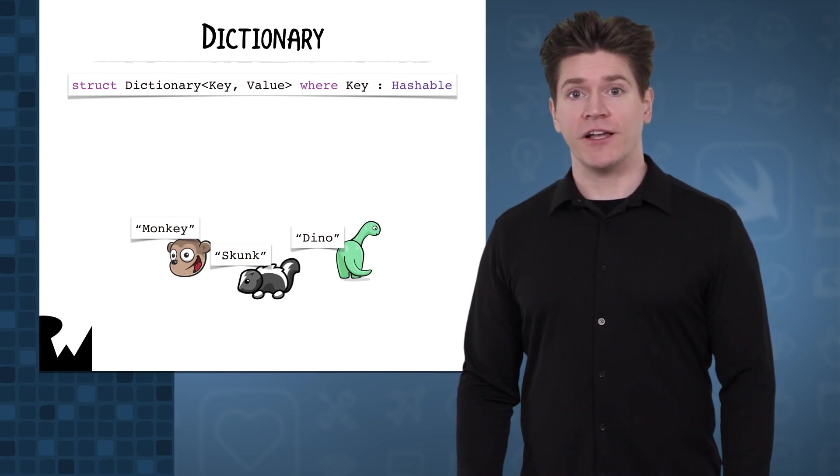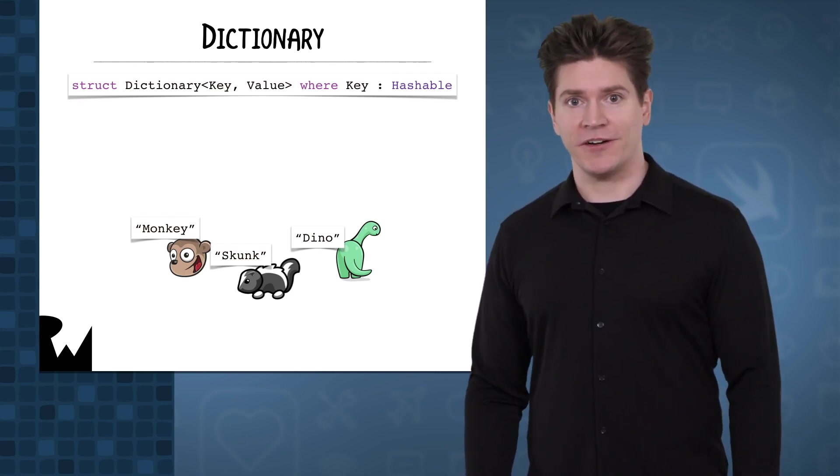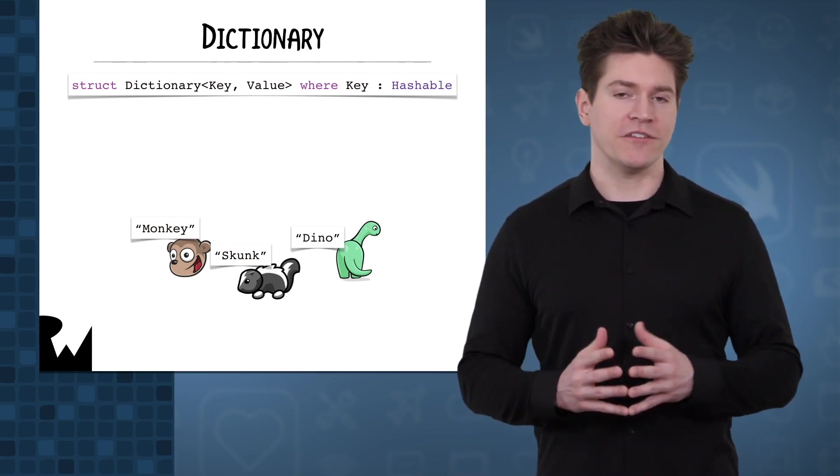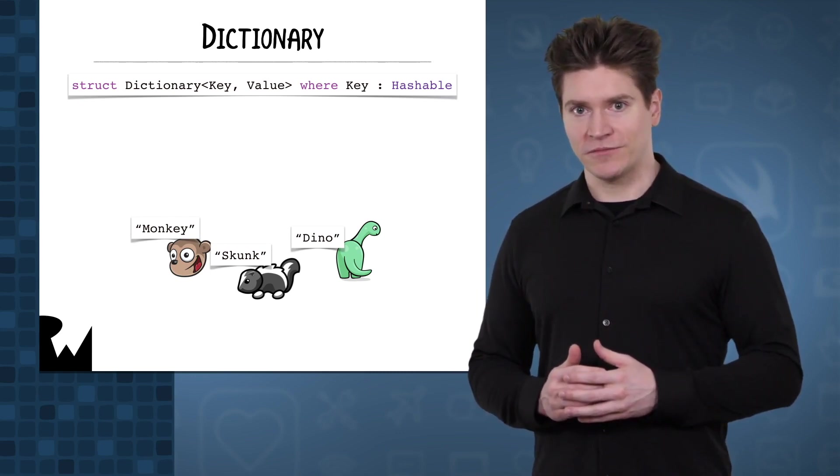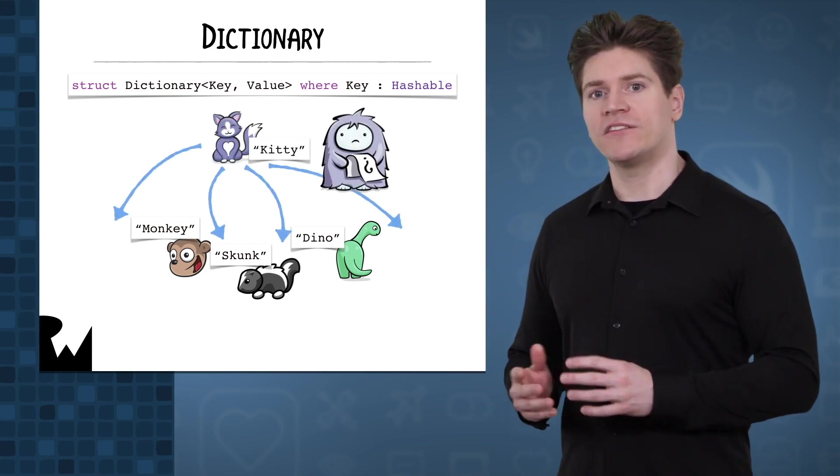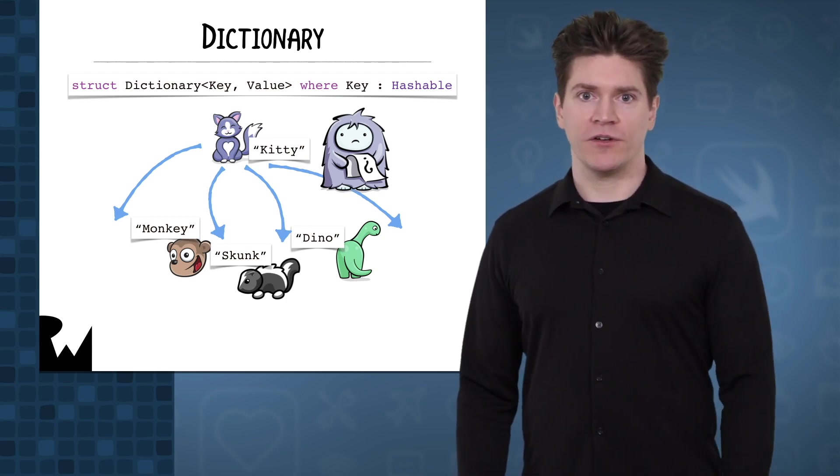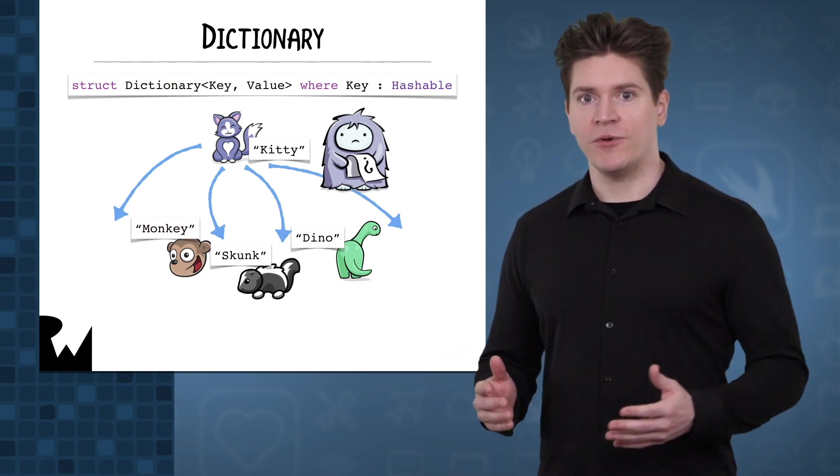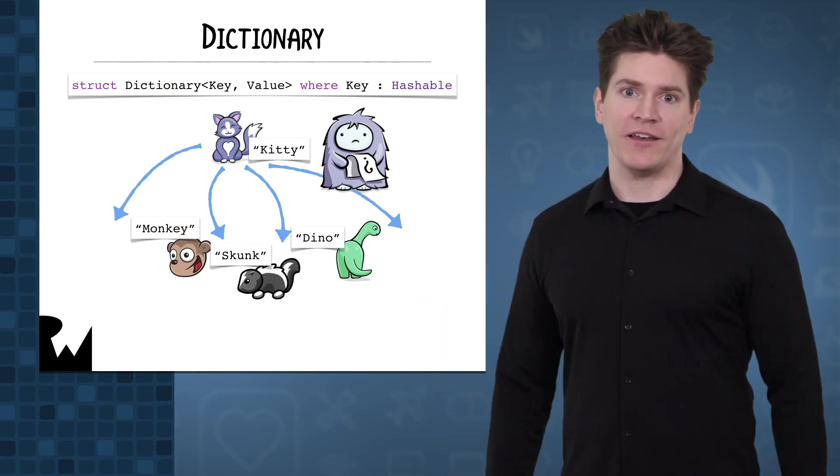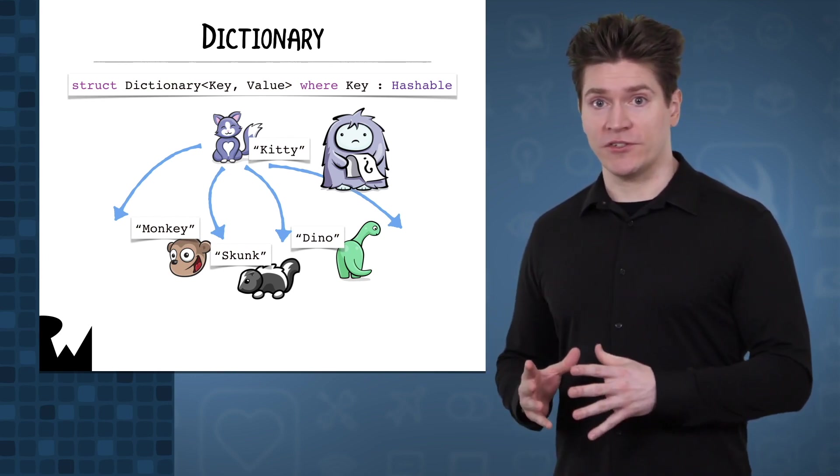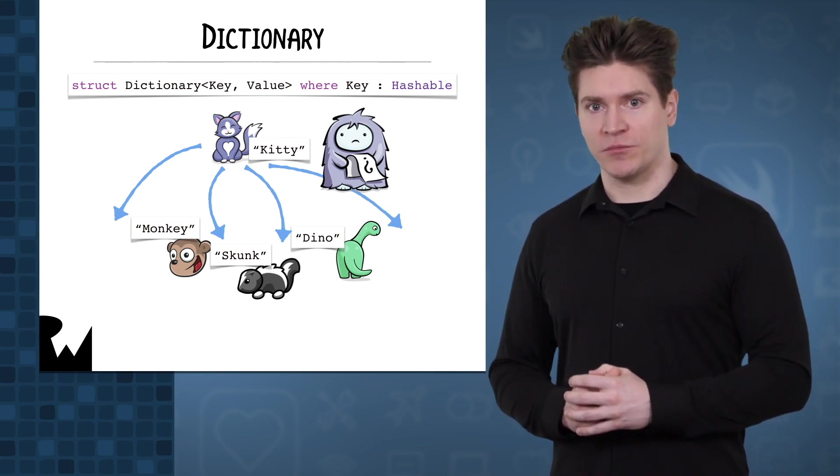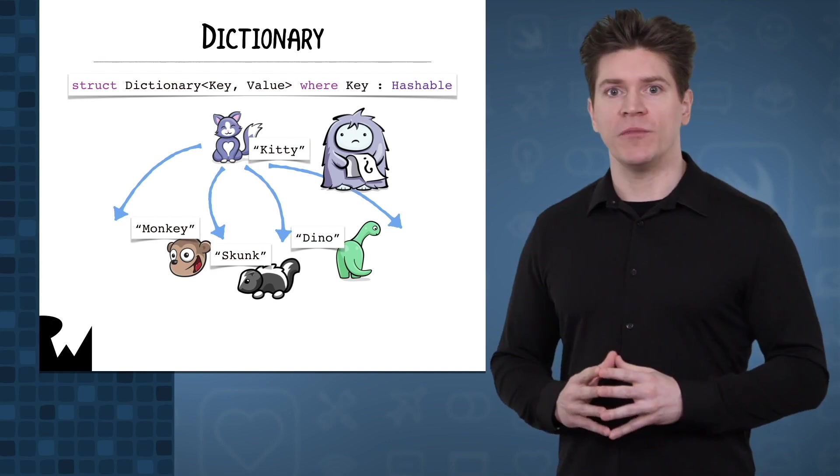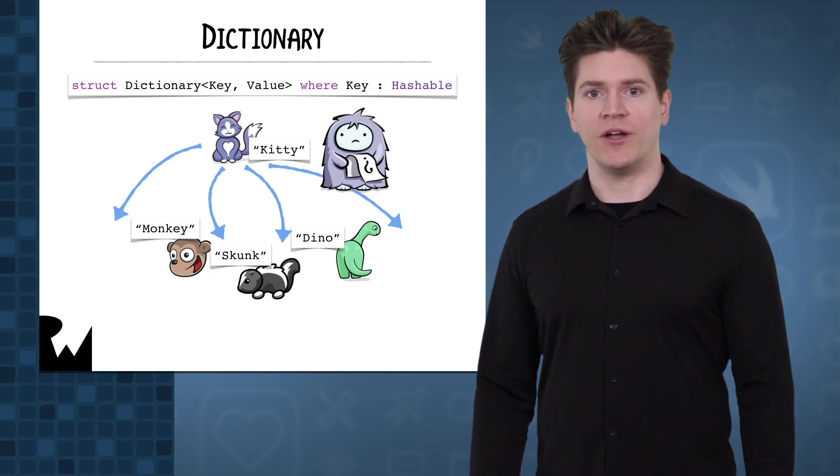There's another generic collection you should be familiar with: dictionary. Dictionaries are collections of key-value pairs and have some different characteristics. For example, unlike arrays, dictionaries aren't explicitly ordered. When you add something to a dictionary, you have no idea where it will be added. You can still iterate through a dictionary because they do adopt the collection protocol, but the order of elements will only stay the same until the dictionary is mutated in some way.